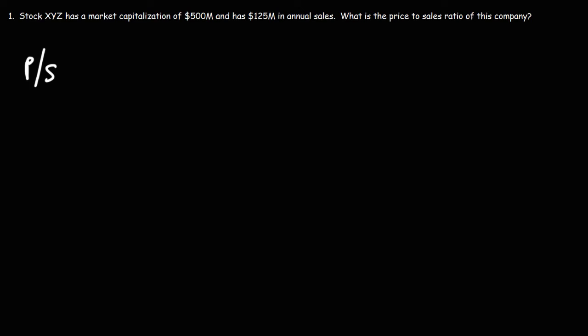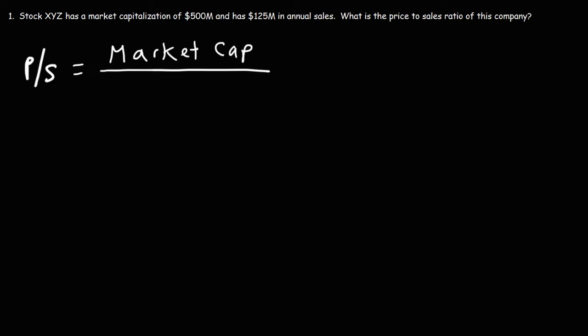The price-to-sales ratio, indicated by the letters P over S, is basically the price of the company — which is the market capitalization — divided by the sales of the company. And this is the annual sales, or the sales that occurred in the last 12 months.